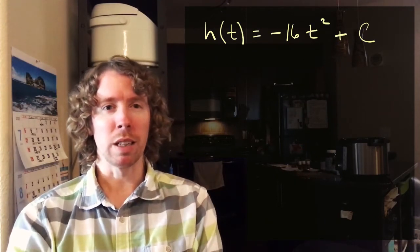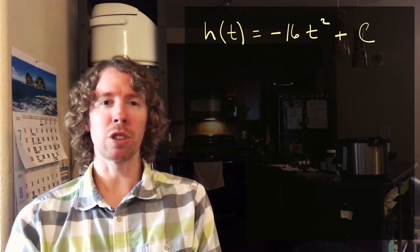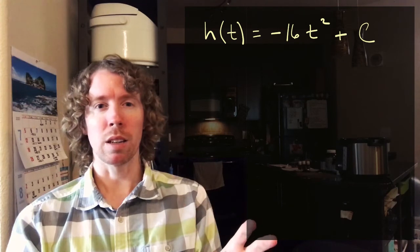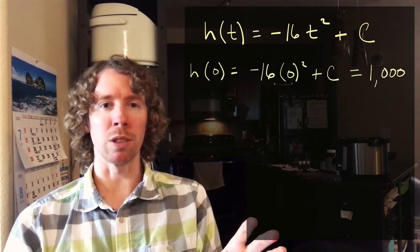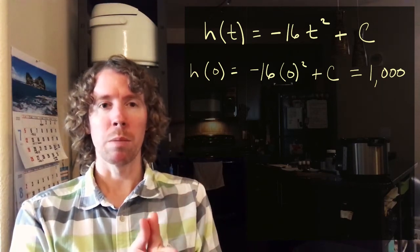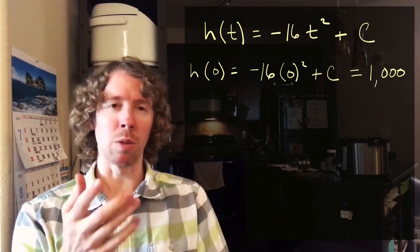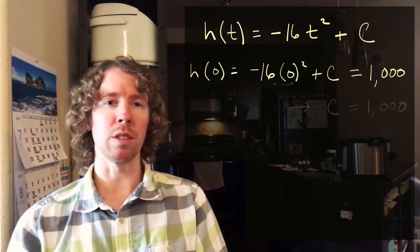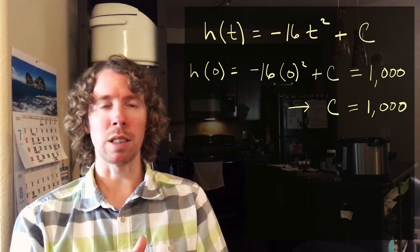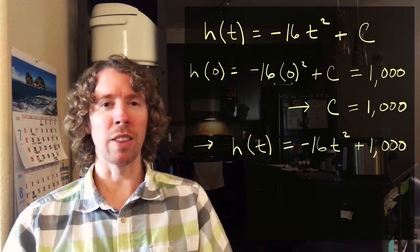The other thing we know is that the position at t equals zero is a thousand. So if we plug in zero for t into our height function, we should get one thousand: negative 16 times zero squared plus C equals one thousand. Simplifying, we get C = 1000. So we update the height function: h(t) = -16t² + 1000. And that's the height function.